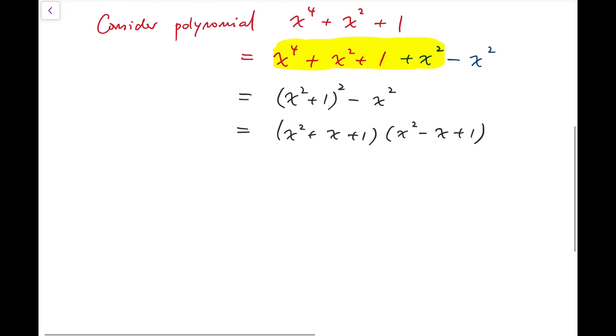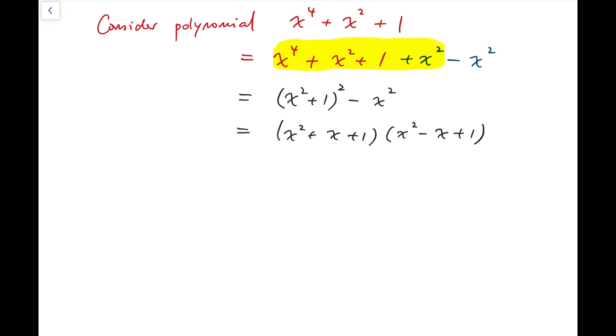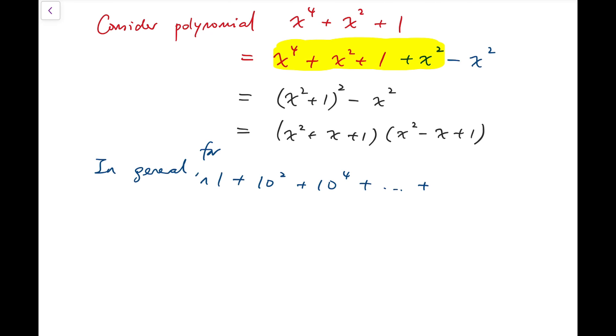Now in general, those numbers are of the form 1 plus 10 squared plus 10 to the power of 4, I'll add a word 4 for these kind of numbers all the way up to, now it depends on what powers of 10 we are getting to.